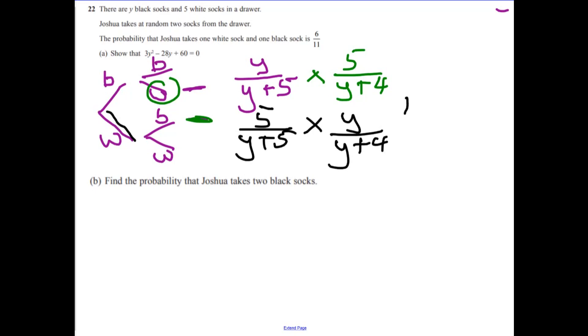Now we know that if we do these two calculations and add them together, then we should get 6 over 11. Now if we do this bit, that's just going to be 10y over y plus five times y plus four.